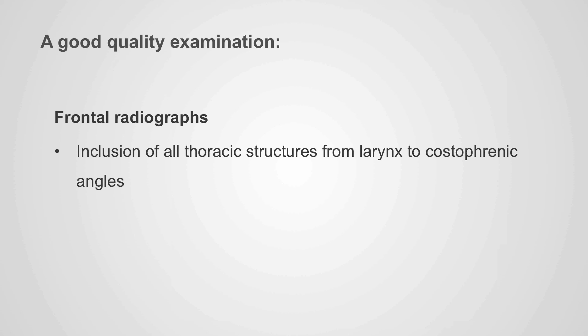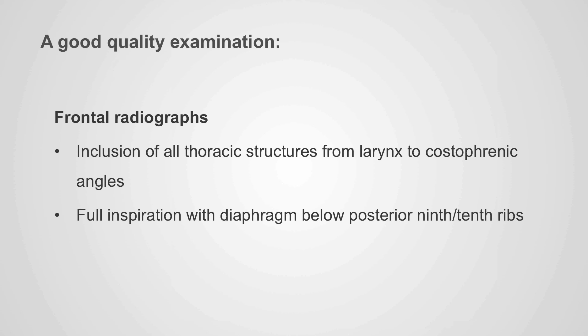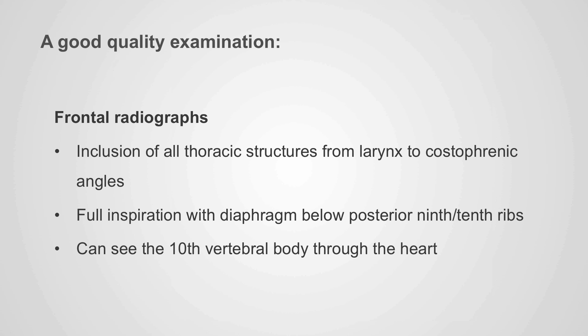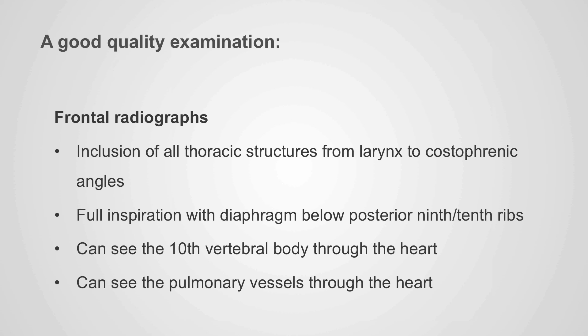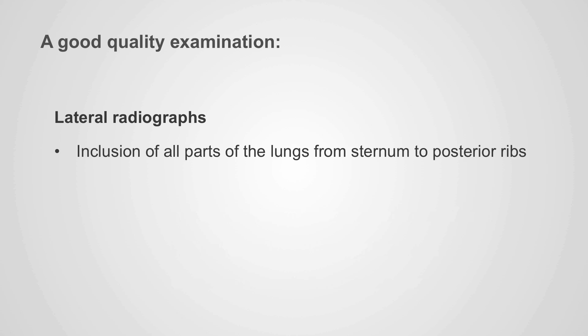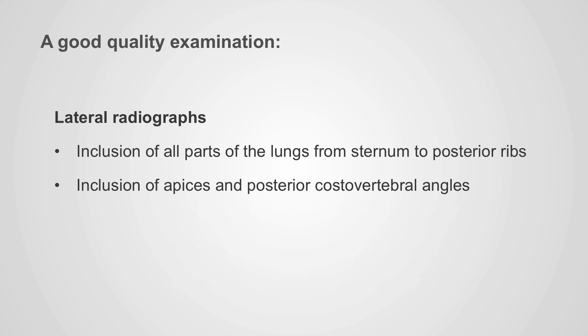To summarize, a good quality frontal examination should include all of the thoracic structures from the larynx to the costo-vertebral angles, should be taken in full inspiration with the diaphragms below the posterior 9th or 10th ribs, and we should be able to see the 10th vertebral bodies through the heart and see the pulmonary vessels through the heart. A good quality lateral radiograph should include all of the parts of the lungs from the sternum to the posterior ribs, and include the apices and the posterior costo-vertebral angles.